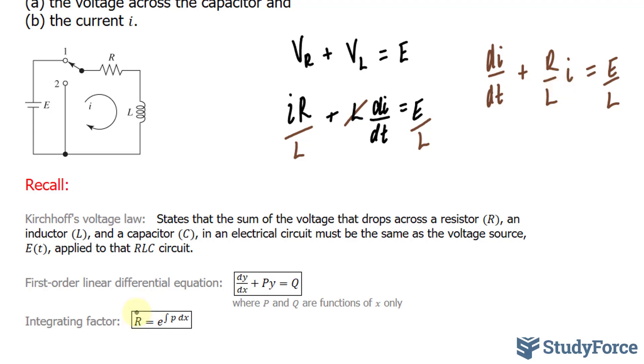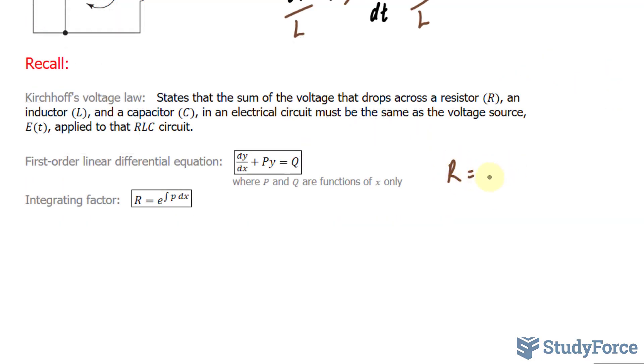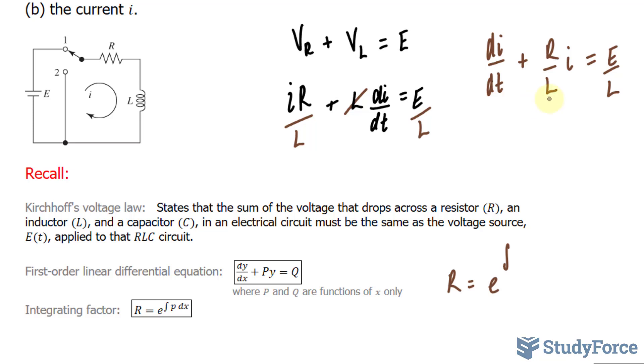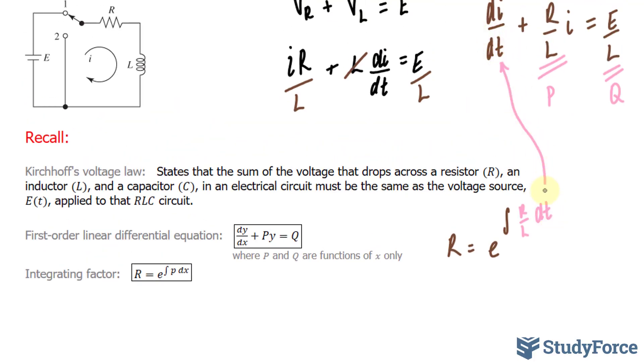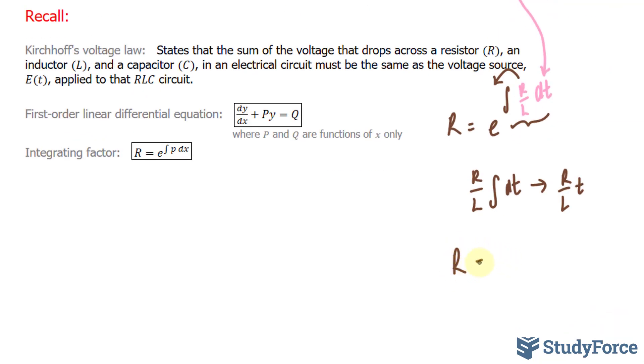That being said, I'll find my R value next. We have R is equal to e to the power of the integral of P. Now we set P as this. So we have the integral of R over L dt. Notice that this and this match and they have to. Integrating this function isn't hard whatsoever. R over L is a constant, so we can pull that out. We have R over L times the integral of dt. This becomes R over L times T, and now this is the power to the base e, where R is equal to e to the power of R over L times T.